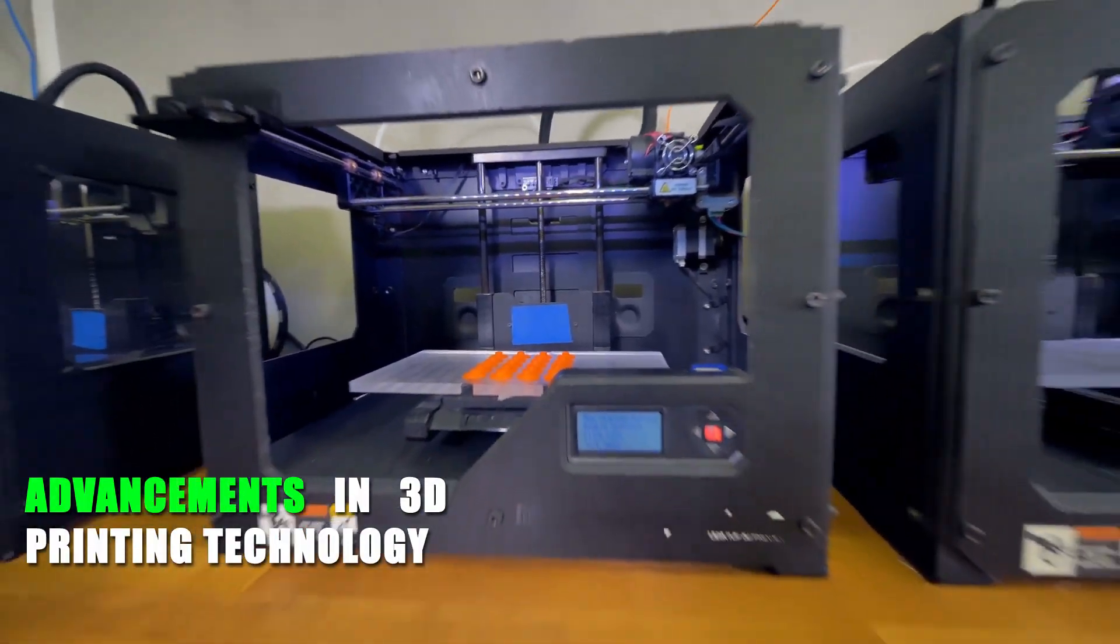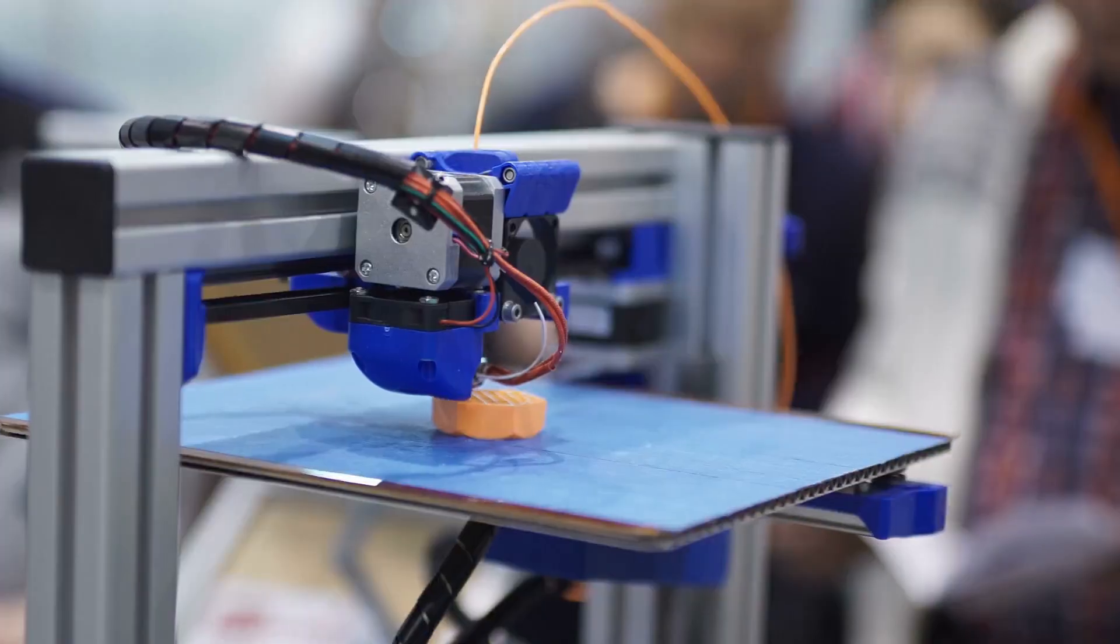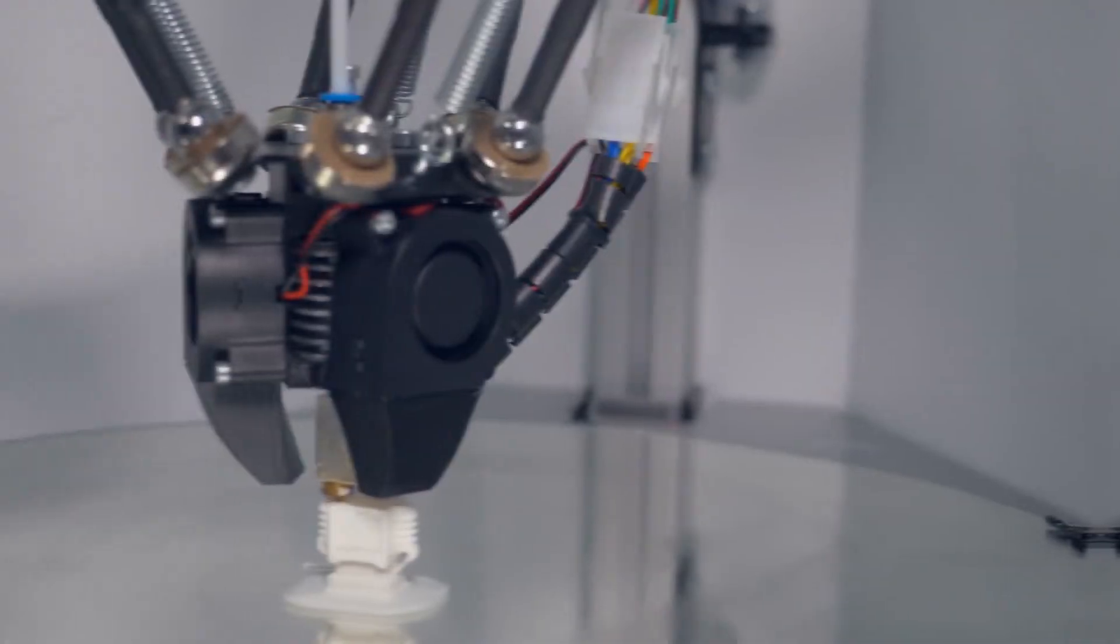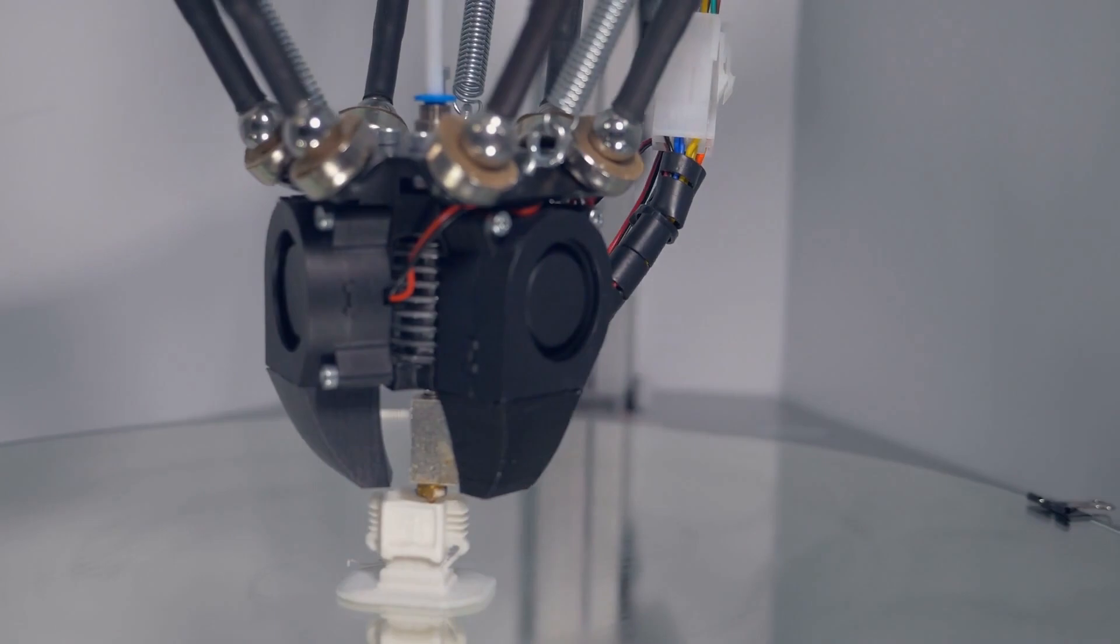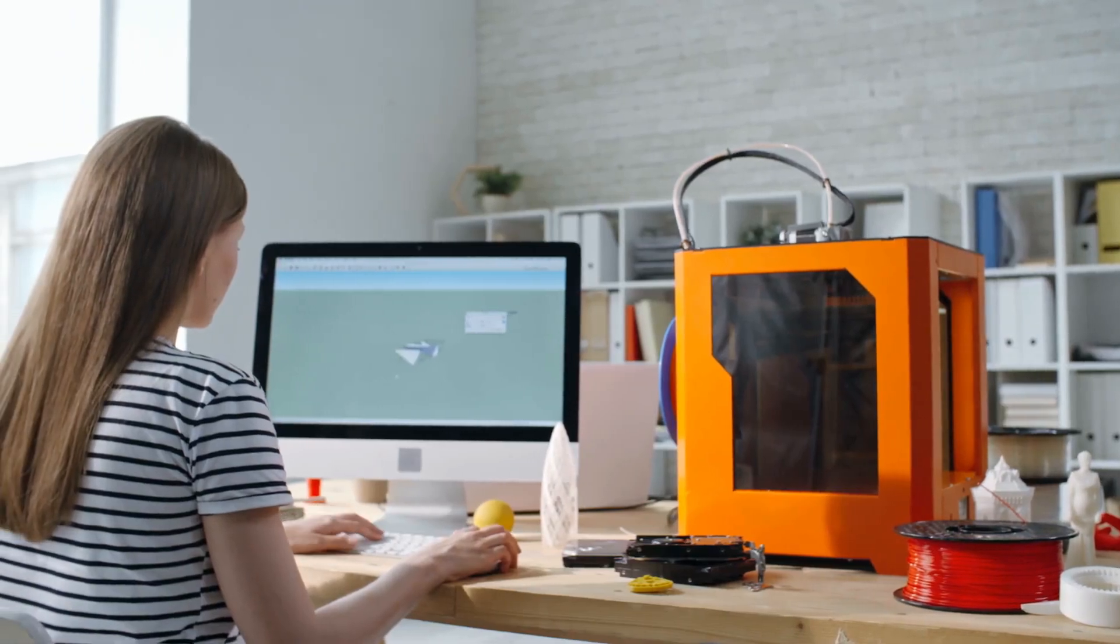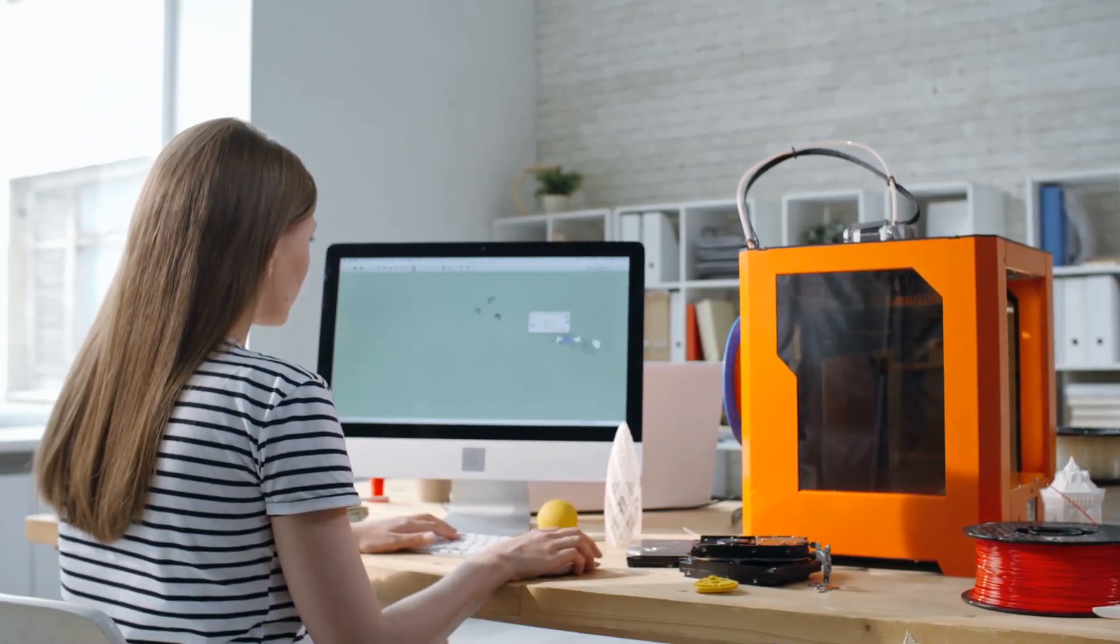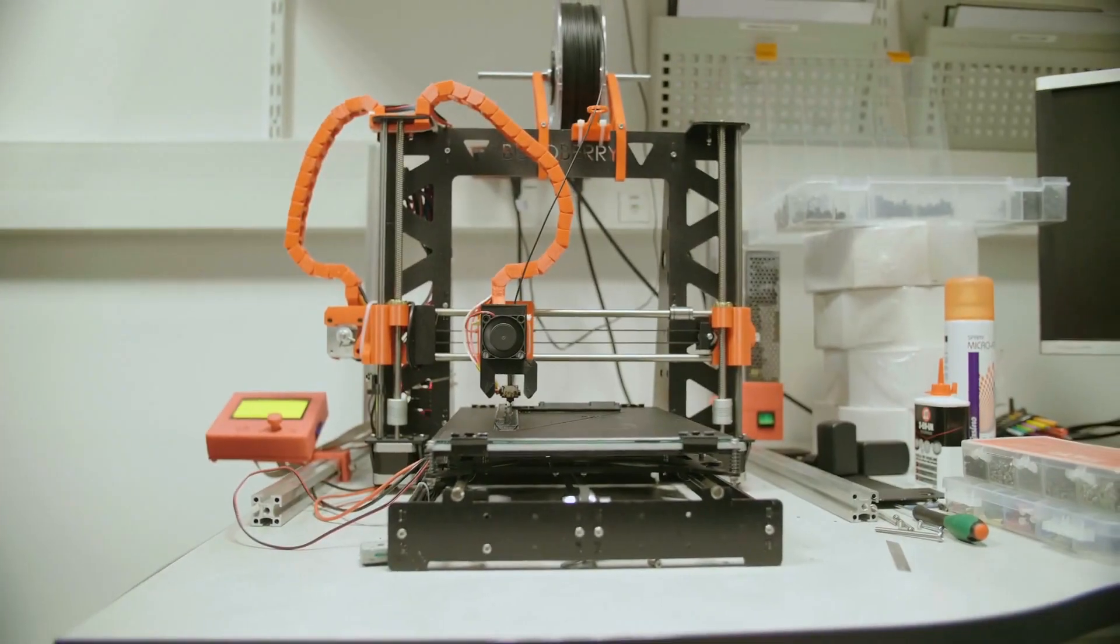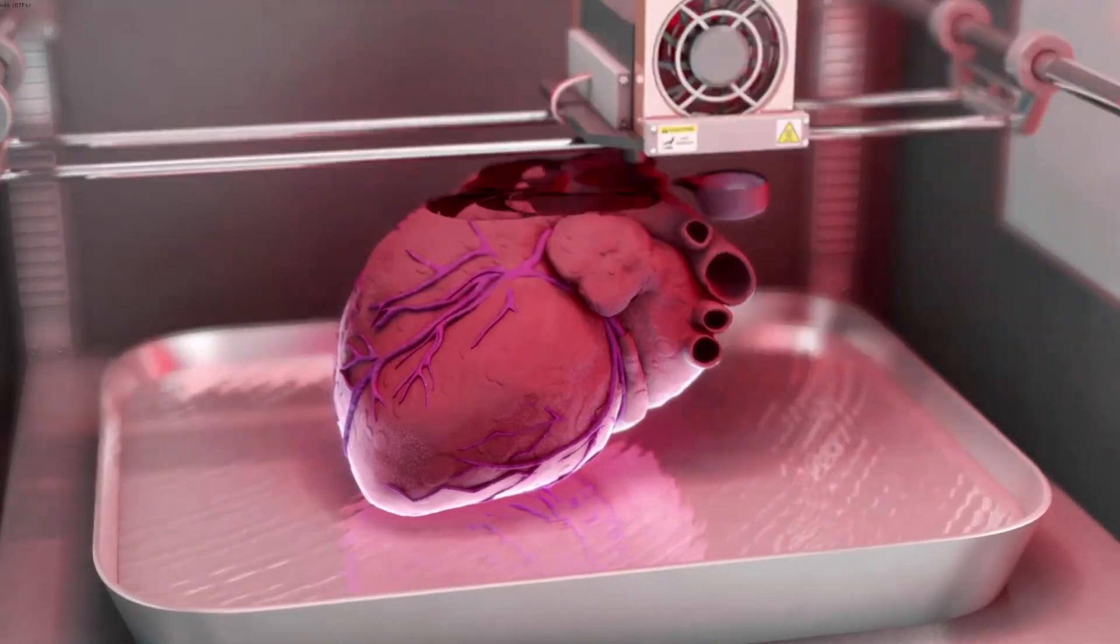Advancements in 3D printing technology. In recent years, advancements in 3D printing technology have made it possible to print larger, more complex parts at a faster pace. 3D printers are now capable of printing with a wide range of materials, including plastics, metals, and even biological materials like living cells.